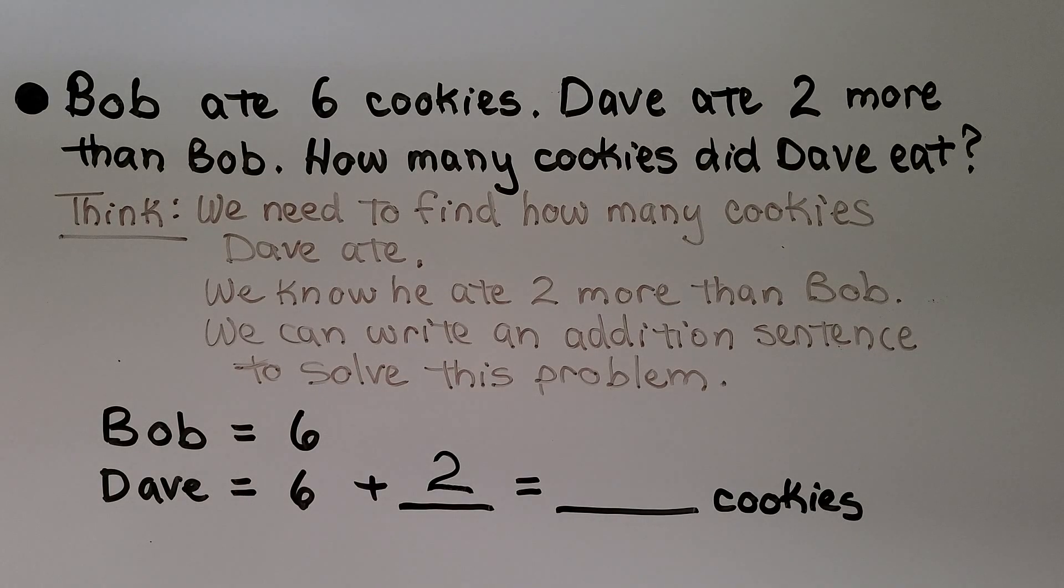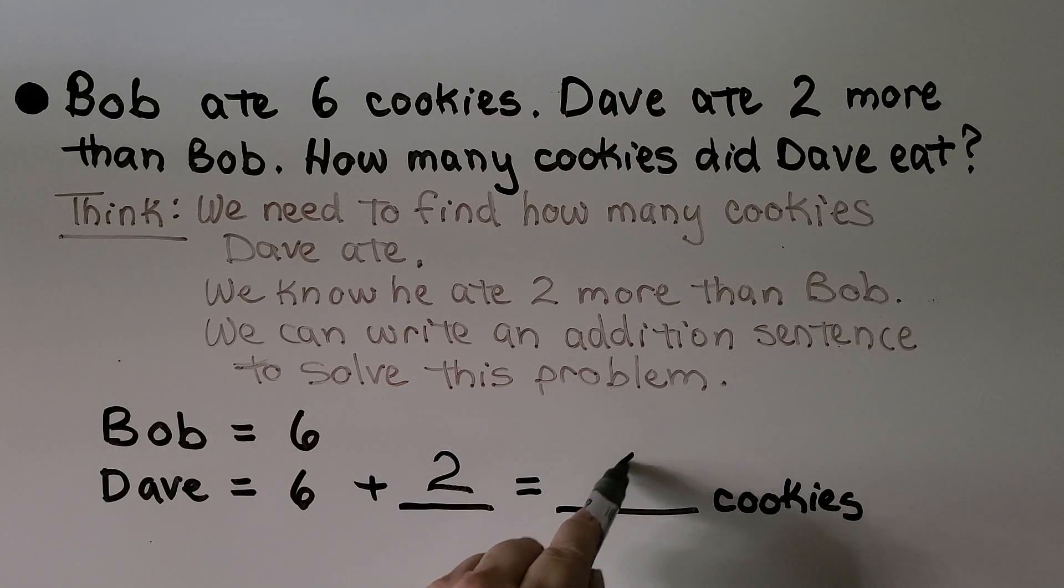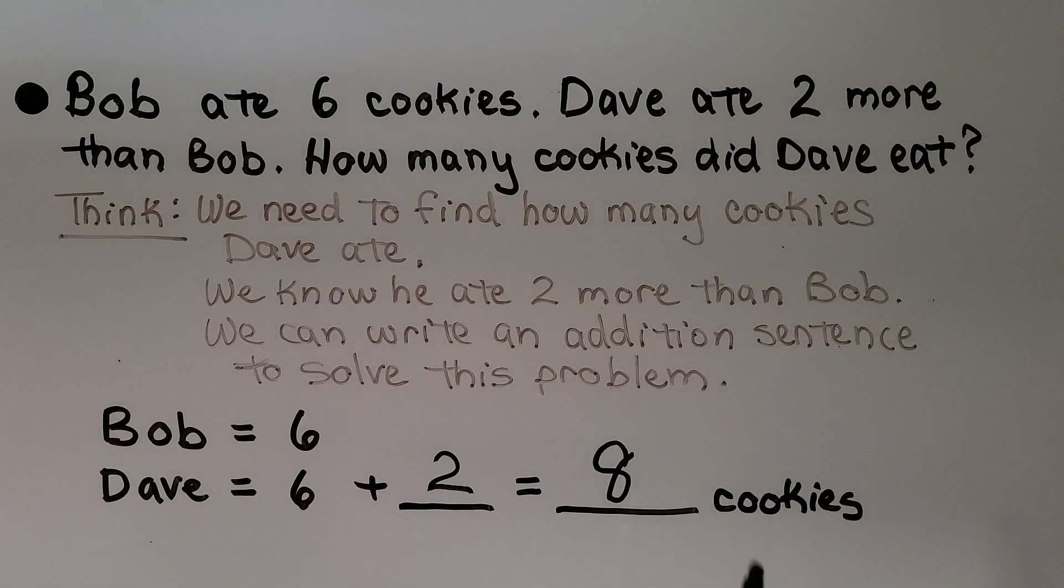So how many cookies did Dave eat? We can start with the greater addend 6 and we can count on 2. 6, 7, 8. Dave ate 8 cookies. We make sure our answer is labeled cookies so we know what we were counting.